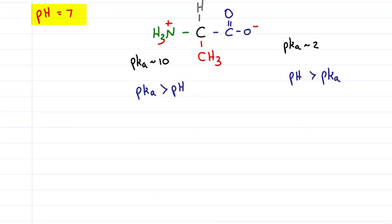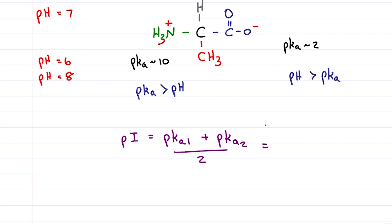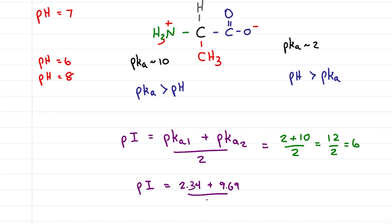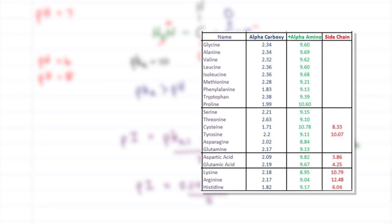We randomly chose pH 7, but pH 6 and 8 are also above the carboxy pKa giving me the negative, and also both below the amine pKa to give me a positive. To find the pI, take the average of the two pKa values. Using our MCAT estimates, that's 2 plus 10 over 2, giving 12 over 2 for 6. Biochem students, that's 2.34 plus 9.69 over 2 for 6.15. For the remainder of this video, we'll use the MCAT memorization values — you can find the full table on my website linked below.